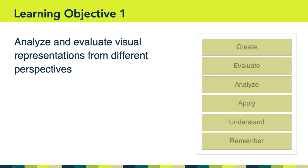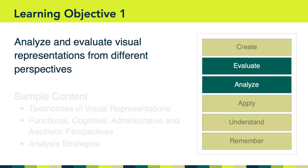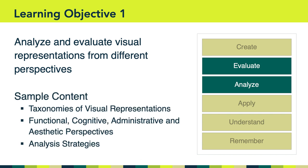Our first learning objective states that we will analyze and evaluate visual representations from different perspectives. Relating this to Bloom's taxonomy, we're focusing on analysis and evaluation. Topics we'll cover include different taxonomies of visual representations — for example, the difference between symbolic and iconic representations. We'll also analyze visual representations from functional, cognitive, administrative, and aesthetic perspectives, and learn strategies to help us analyze and evaluate various types of representations.